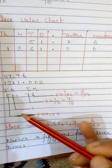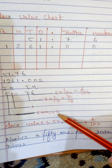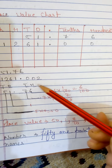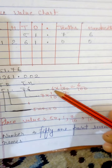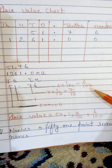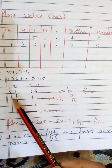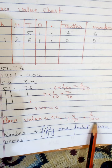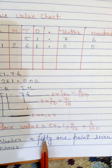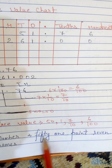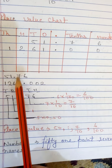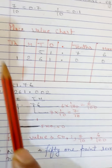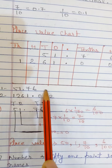For 51.76: five is in the tens place, so five times ten equals fifty. One is in the ones place. Seven is in the tenths place, so seven upon ten — 7/10. Six is in the hundredths place, so six upon hundred — 6/100. The place value gives us fifty plus one, which is fifty-one. We say 'fifty-one point seven six' — not 'fifty-one point seventy-six.' Similarly, 1261.002 is read as 'one thousand two hundred sixty-one point zero zero two.'